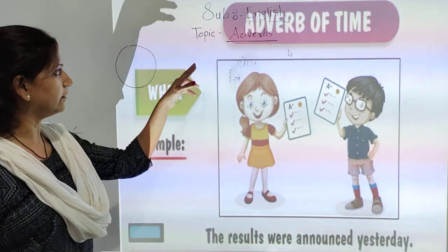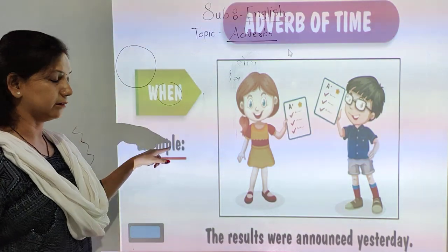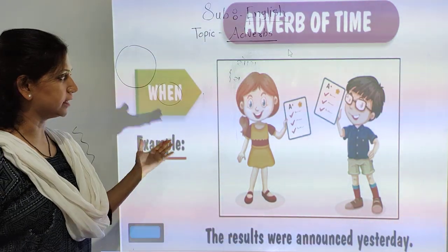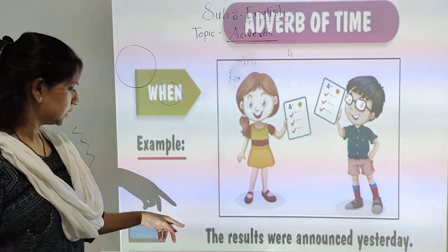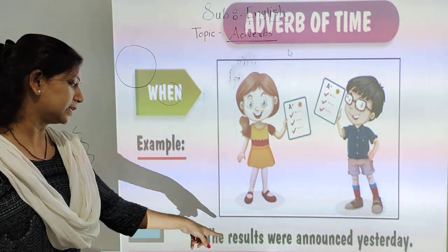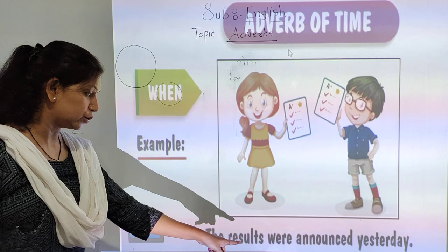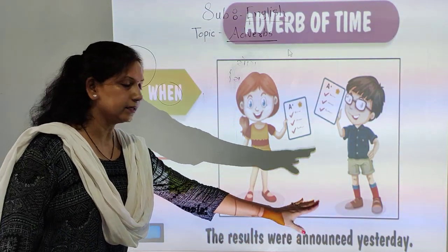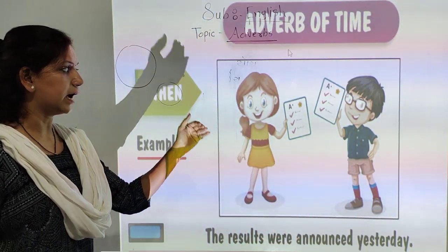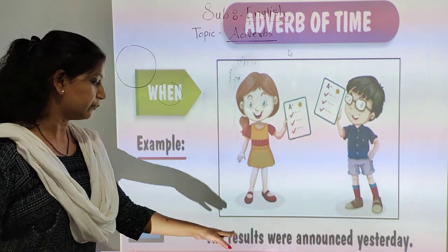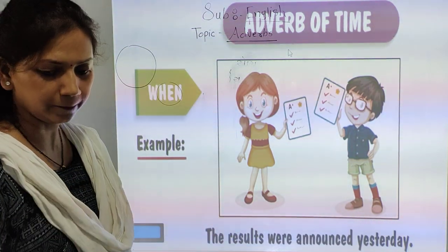The next example is adverbs of time — when? Here we can see when the action happened. The result was announced yesterday. 'Yesterday' shows the adverb of time. When was the result announced? Yesterday.